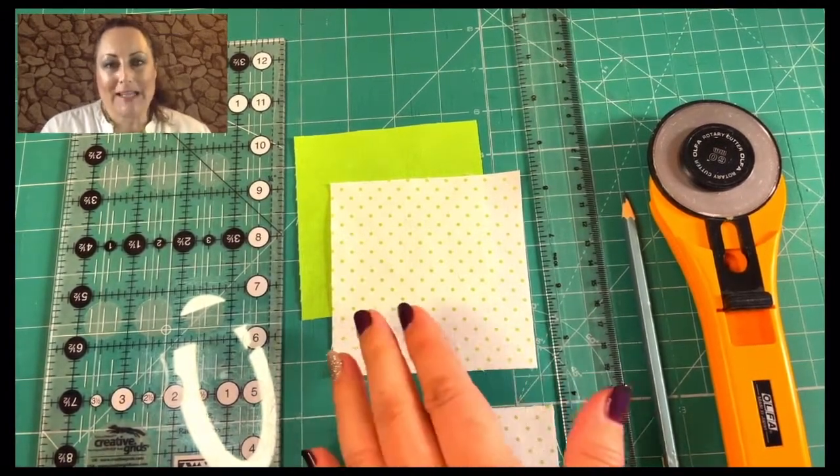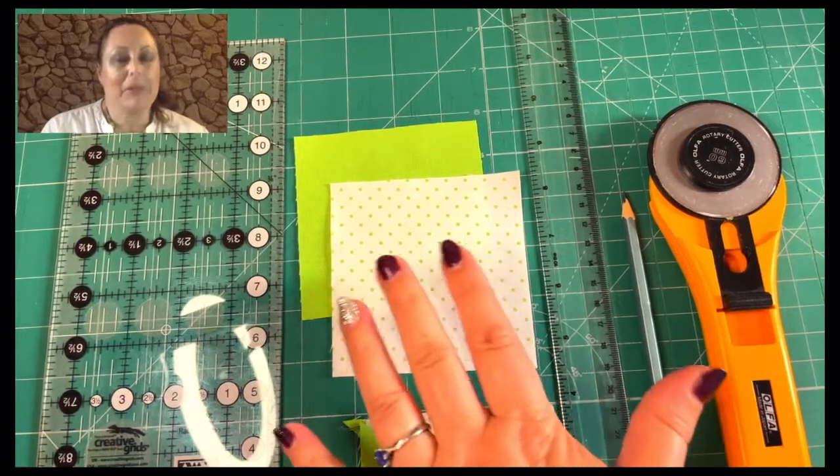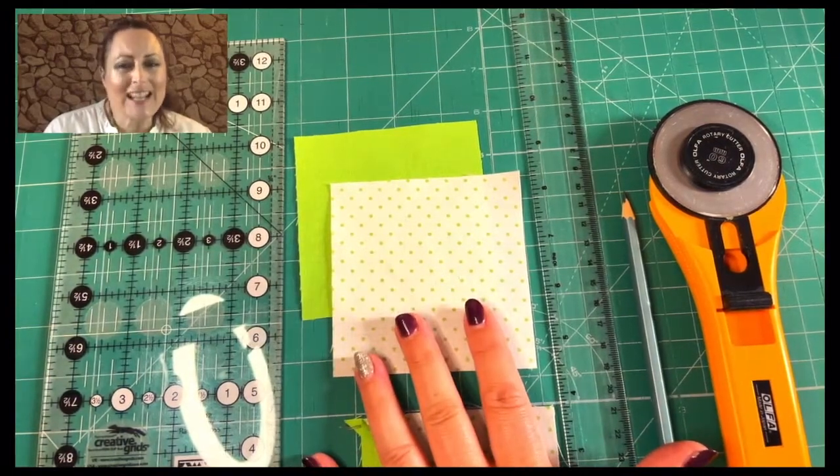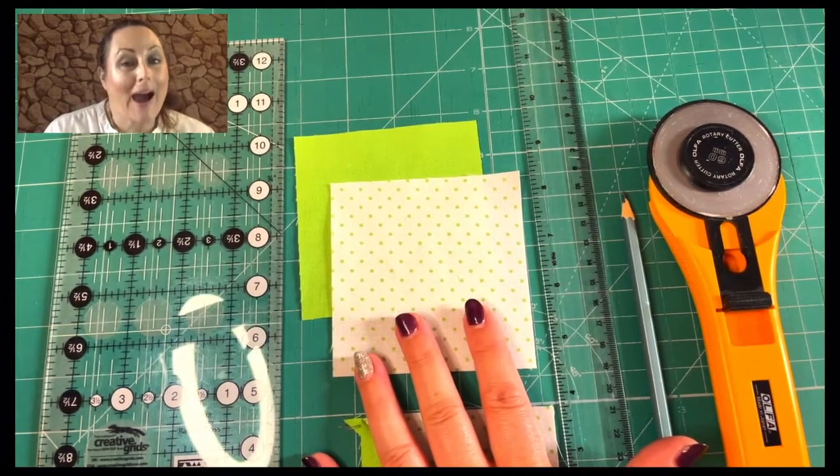But how on earth do you start adding up three and a half inches plus seven eighths of an inch? Because quite honestly, I don't know. However,